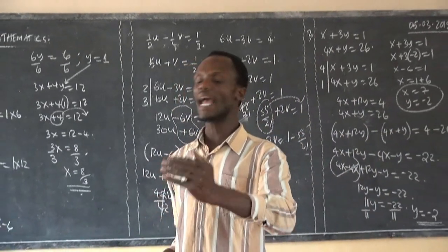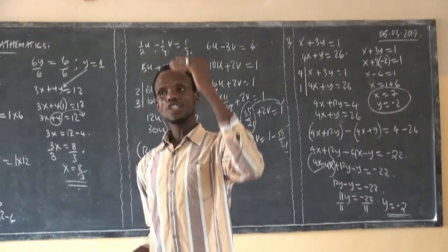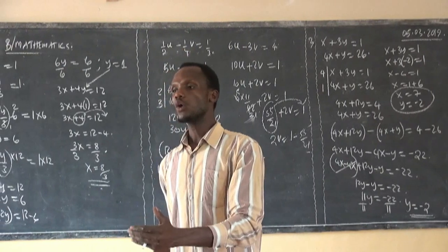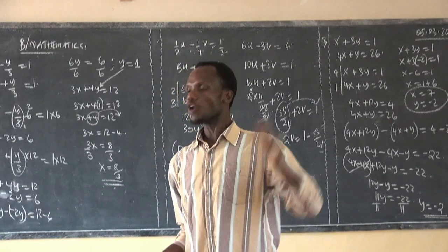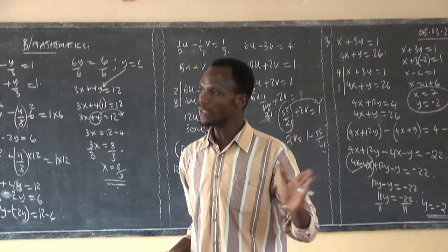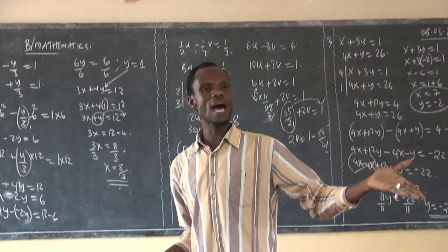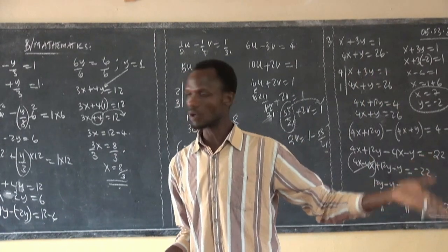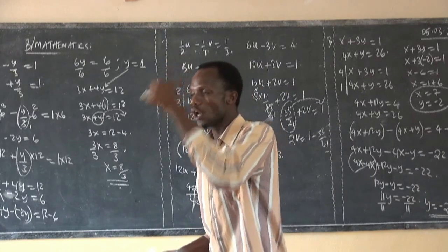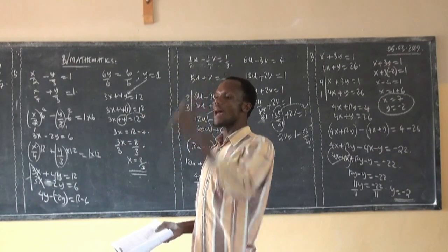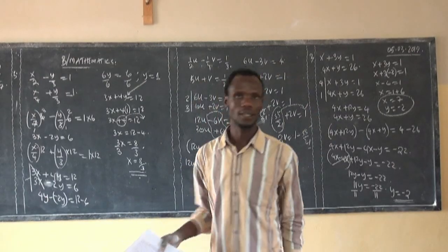That is all about the elimination method. Something you have to understand: you go step by step, following the working. No collective answer without a collective solution — a collective solution leads to a collective answer. If there is no proper working, there is no proper answer. That is something you definitely have to understand. The solution, meaning the working you have done, justifies your answer. Thank you very much.